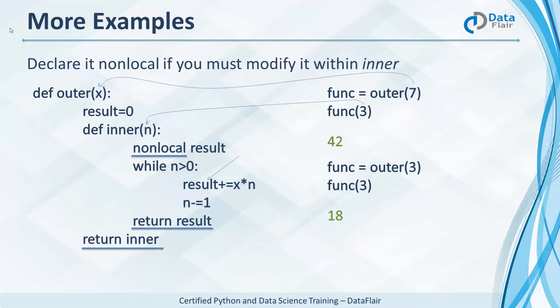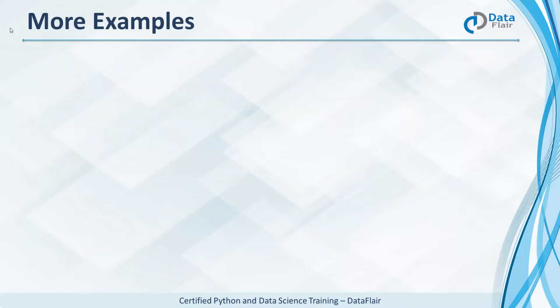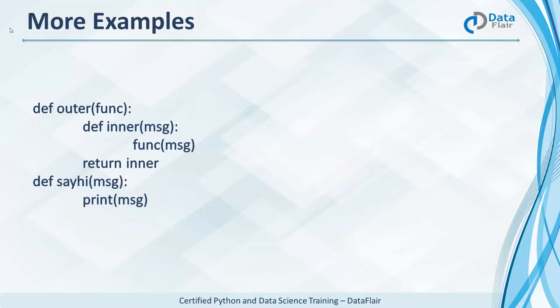Finally, the outer function returns the inner. One more. Here, the outer function takes a function as an argument and has the inner function call this function to print the message it takes as argument. The function we'll pass to outer is sayHi. This takes a message and prints it.